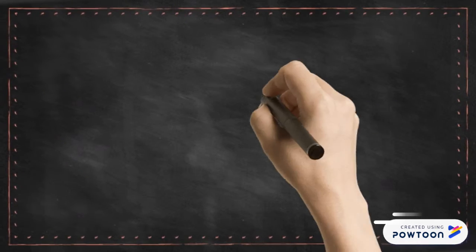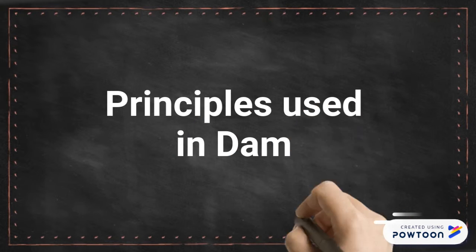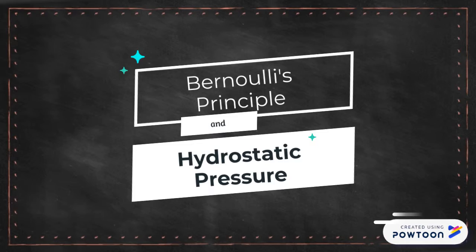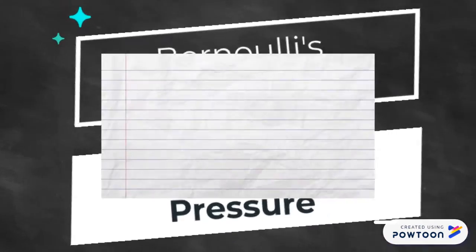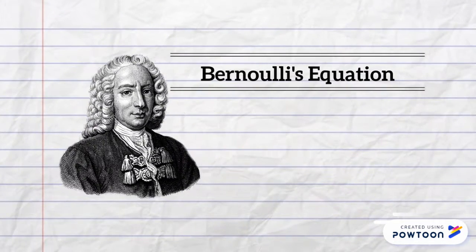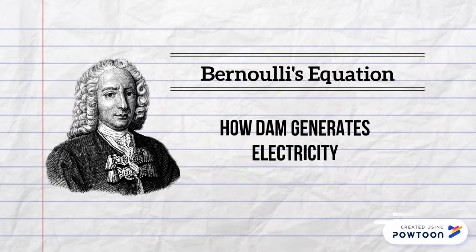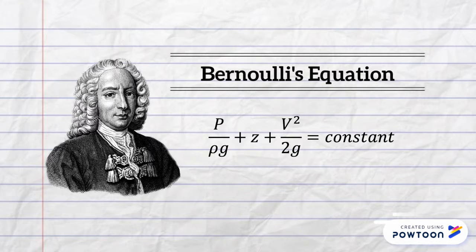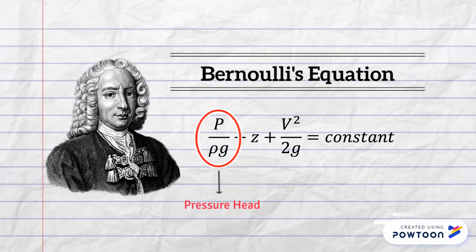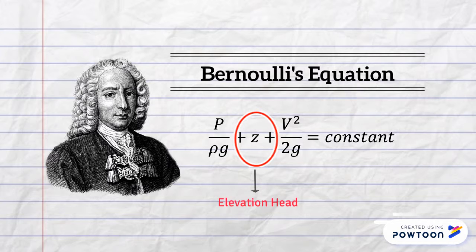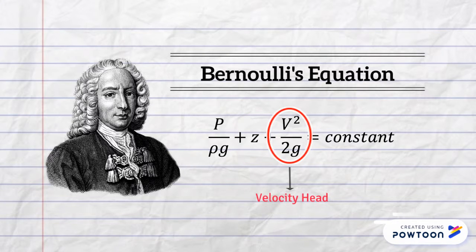The two main principles that are vital for construction and operation of dams are Bernoulli's equation and hydrostatic pressure. Bernoulli's equation can be used to explain how electricity is generated in hydropower dams. The equation states that energy heads of water are: pressure head, which shows the work done related to water pressure; elevation head, representing the potential energy; and velocity head, which is the kinetic energy of the water.